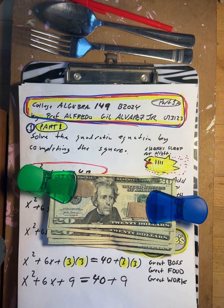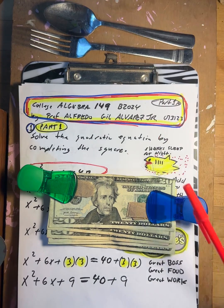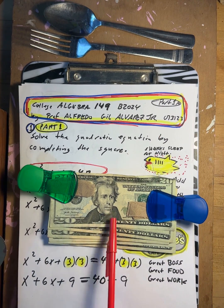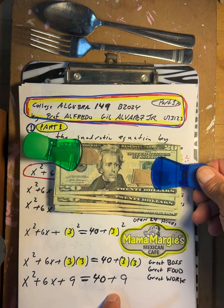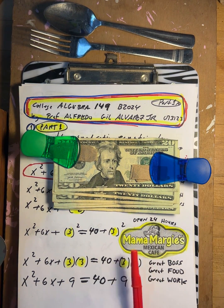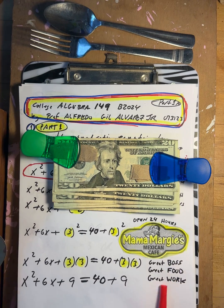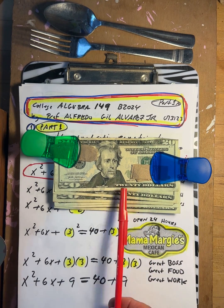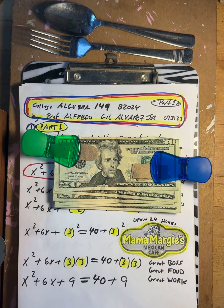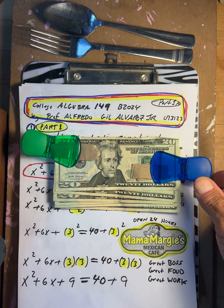Solve the quadratic equation by completing the square. You know what? Before I do that, if you need money right now, you need some of this cash right here, guess what? Open 24 hours in Mama Margie's, just got Mexican cafe. Great boss, great food, great work. You want lots of this, lots of hours, you can get lots and lots of this for college if you need it. But let's say you don't need it.